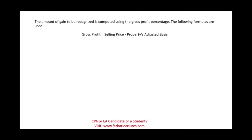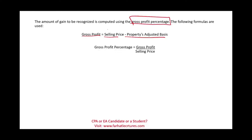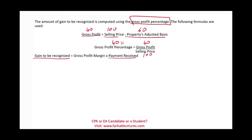When we defer the payment, how much of the payment is considered gain? The gain is recognized using the gross profit percentage. How do you compute it? Selling price minus the adjusted basis gives us the gross profit. Then gross profit divided by the selling price gives the gross profit percentage. For example, if we sold something for $100 and the adjusted basis is $60, the gross profit is $40, so $40 divided by $100 gives a gross profit percentage of 40%. This means 40% of each payment received will be the gain recognized.